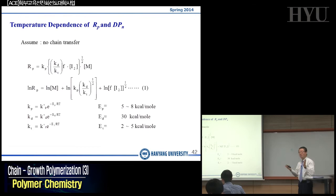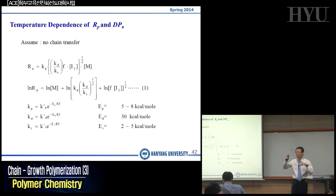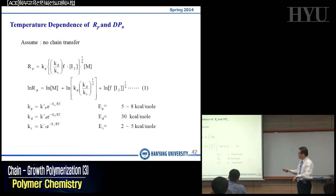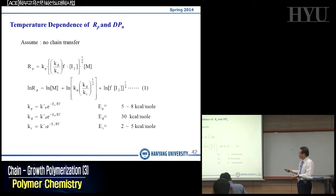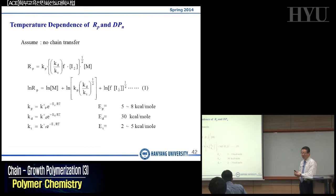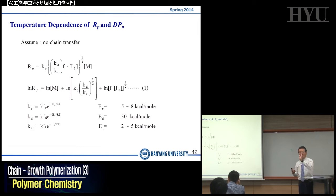If you take the logarithm of the rate equation, you can rewrite it as equation number 1. Monomer concentration and initiator concentration will affect RP but temperature will not change monomer or initiator concentrations. The rate constants are influenced by temperature. If you recall, Kp, Kd, and Kt can each be written as an Arrhenius-type equation: K₀ times exponential of minus E over RT.